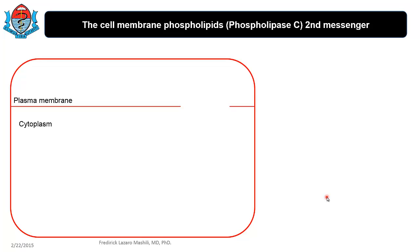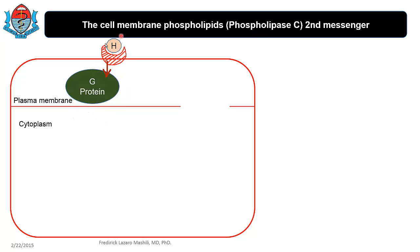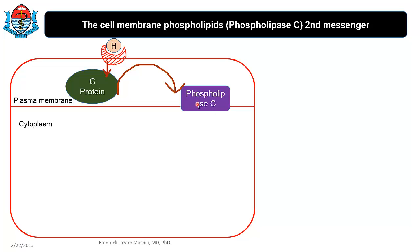Now let's move to the second second messenger and talk about the cell membrane phospholipid. When we talk about the cell membrane phospholipid, we are talking about phospholipase C, which is an enzyme. With cyclic AMP we talked about adenylyl cyclase; here we have phospholipase C. You have your hormone binding to a receptor, activating a G protein as usual, but in this case the G protein will not activate adenylyl cyclase — it will activate phospholipase C.